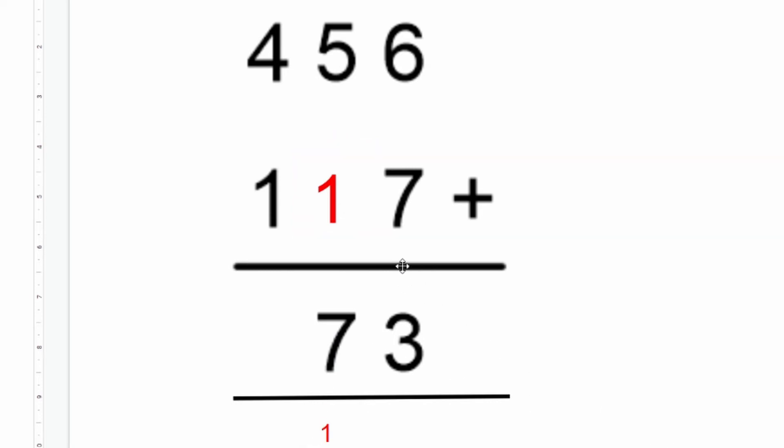On the last column here we've got four add one with nothing regrouped underneath, so we know that the answer that we're looking for is five. So our calculation now reads 456 add 117 is 573.